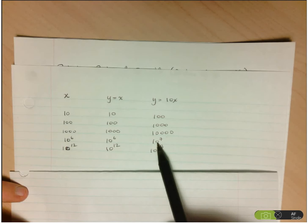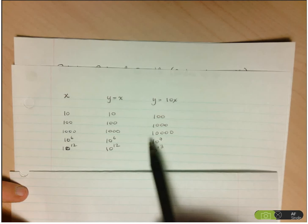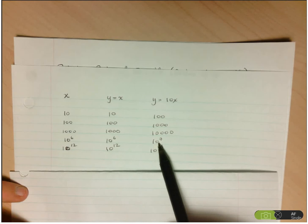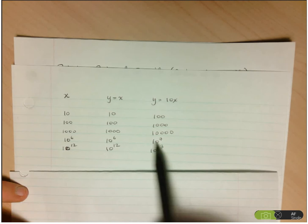So 10 to the 6, 10 to the 7. 10 to the 7 is a much bigger number but we can't really say that 10 to the 6 is insignificant. So 1 million isn't insignificant with respect to 10 million. It's just 10% of it.